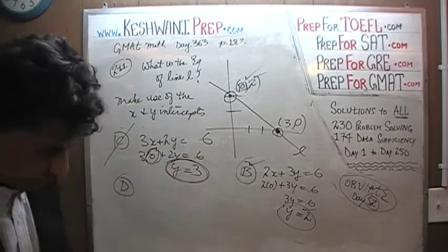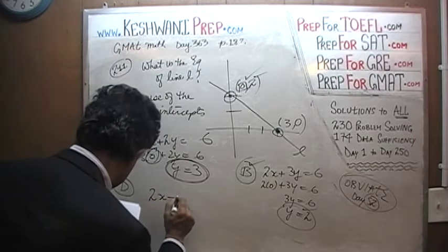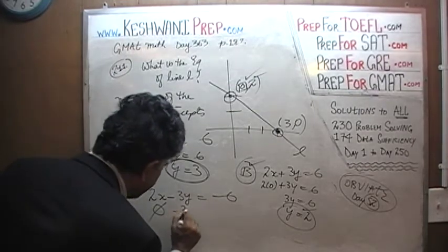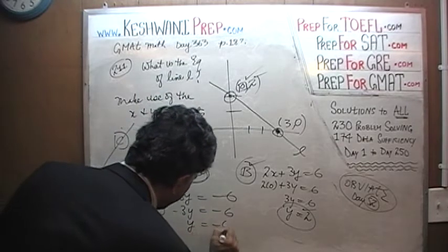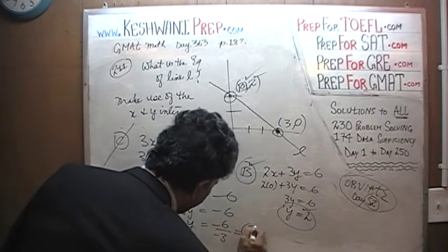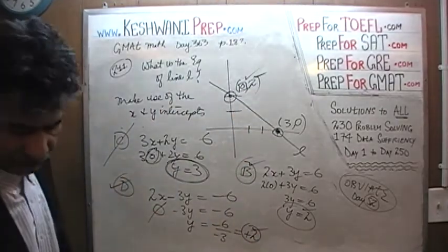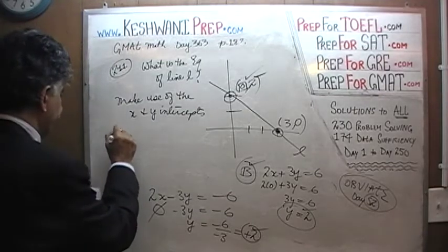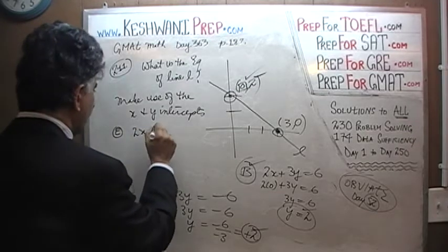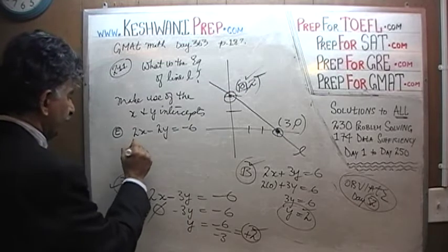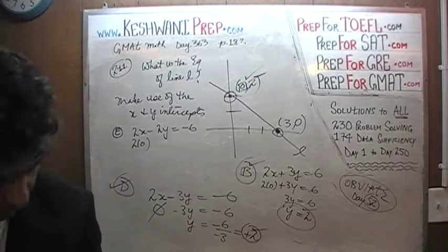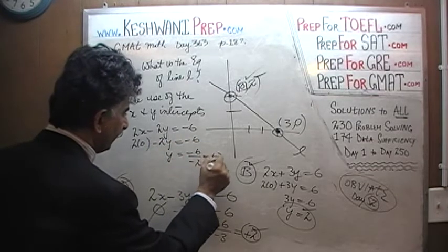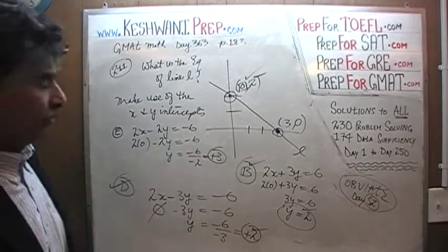Let's look at D. D tells us that 2x minus 3y equals negative 6. Replace x with 0: negative 3y equals negative 6, which means y equals negative 6 over negative 3, which is positive 2. That works — D stays. Let's look at E. E says 2x minus 2y equals negative 6. Replace x with 0: negative 2y equals negative 6, which means y equals positive 3. Y does not equal positive 3 — y has to be 2. E is not the answer.